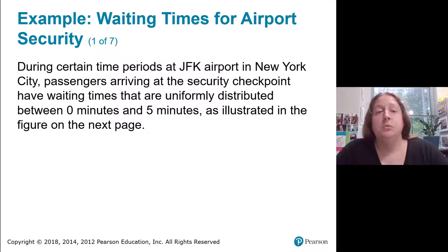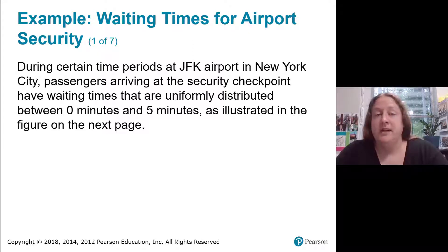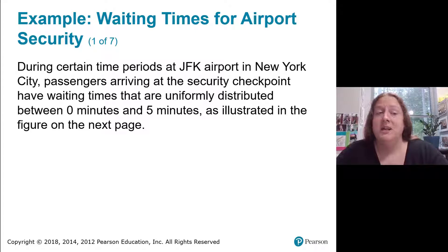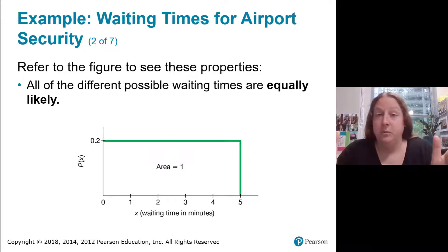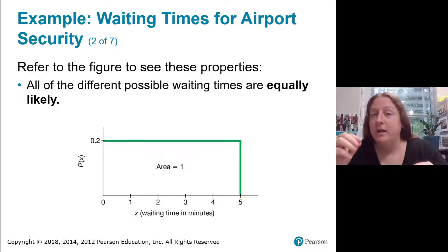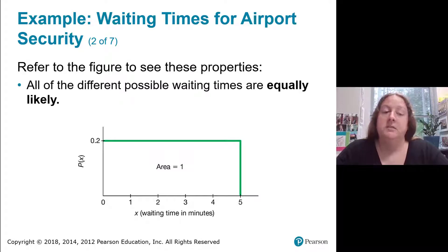Let's look at an example: waiting times for airport security. During certain time periods at JFK in New York, passengers arriving at the security checkpoint have waiting times that are uniformly distributed between zero and five minutes. To figure out the height of that curve, the width of the rectangle is five (from zero to five), so the height must be one over five, so that the area of the rectangle equals one. That means the probability density is 0.2 all the way across between zero and five.